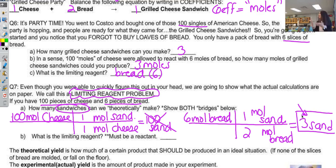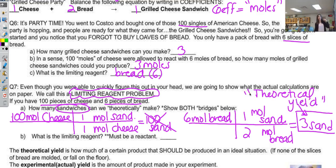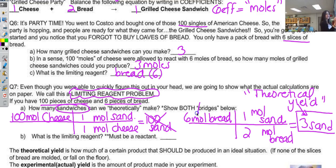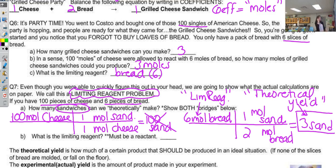In theory, this is how many sandwiches we should make if nothing happens to the bread or the cheese. This is called the theoretical yield. The limiting reagent is always the reactant that gave you the theoretical yield — these two go together. The one that didn't give you the theoretical yield has no name; it would be called the excess reagent — the one that's extra. Point an arrow to the bread: that's your limiting reagent. Point an arrow to the cheese: that's your excess reagent. Our theoretical yield and limiting reagent are always in the same range.